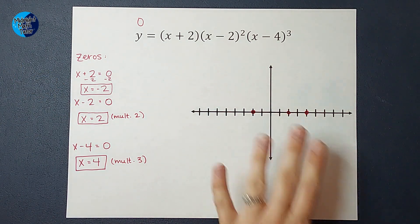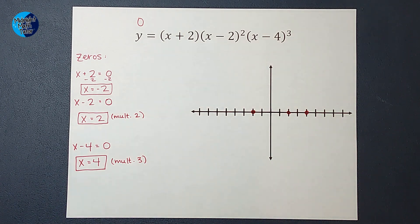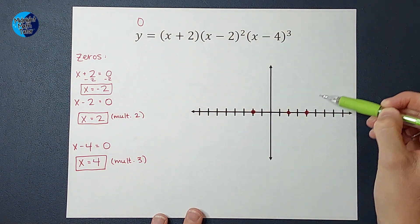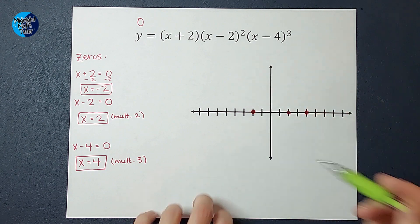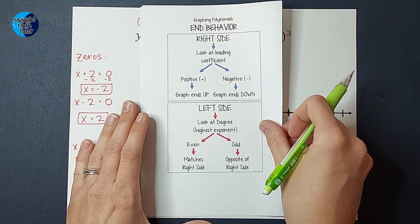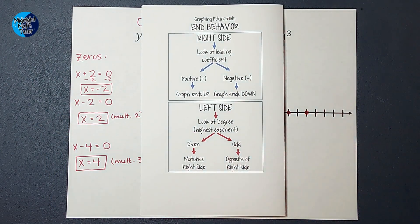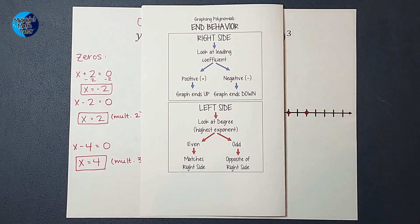Once I find my zeros and graph those, next I'm going to look at end behavior. So from this point, I want to know if my graph goes up or down. And also from this point, I want to know if my graph goes up or down. So I'm going to show you a cute little chart. If this helps you, go ahead and take a screenshot if you're on a phone or take a picture of it.